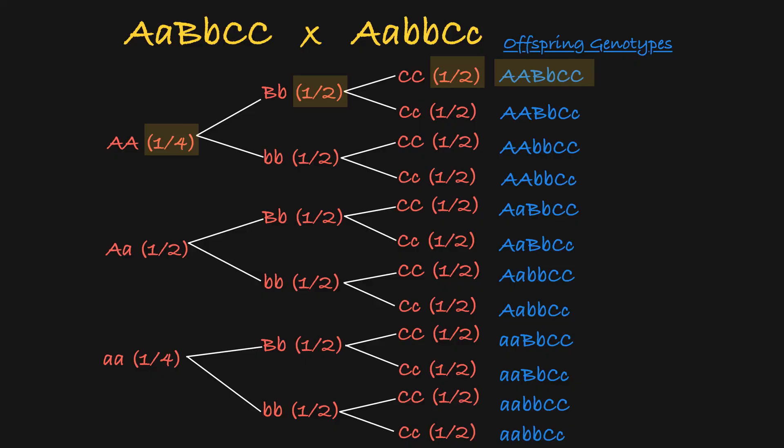One fourth times one half times one half, the probability of getting this genotype in this cross would be one sixteenth.